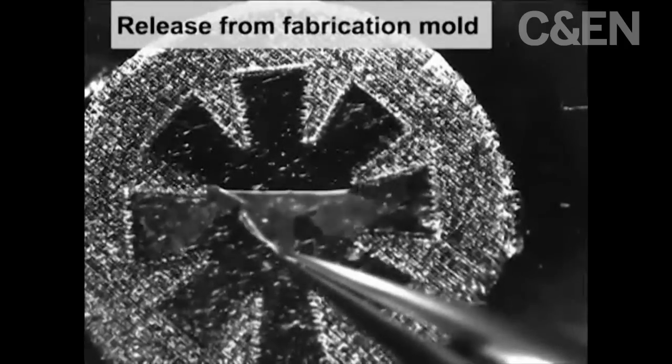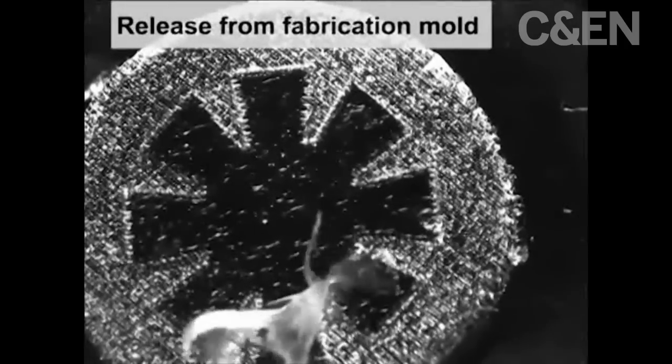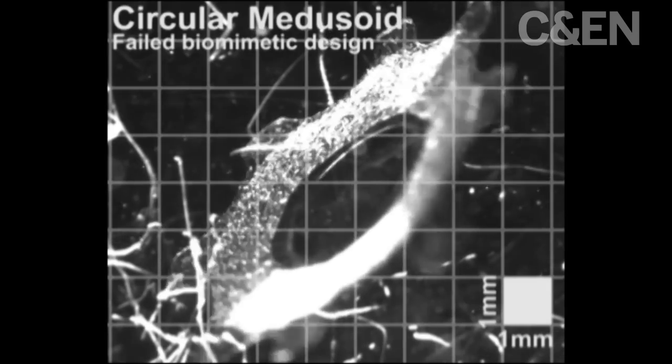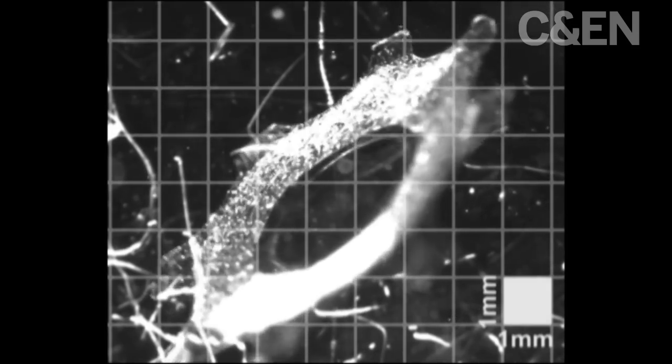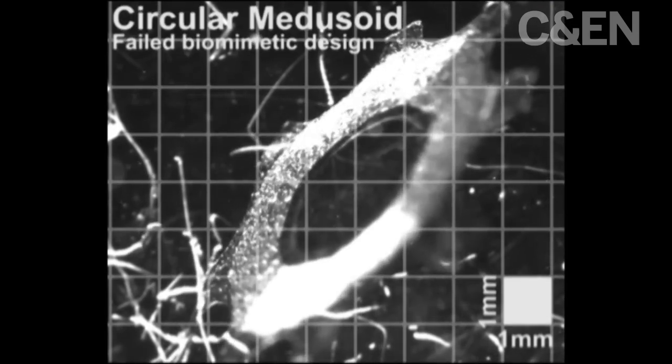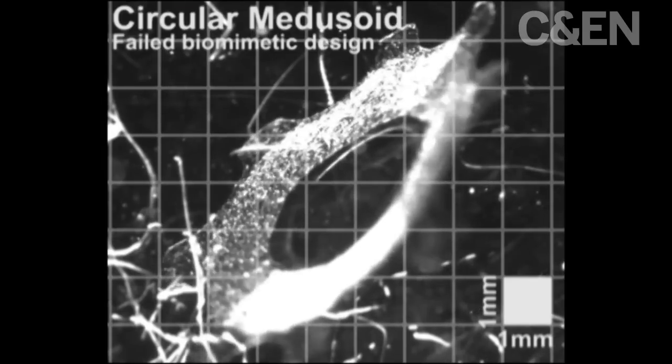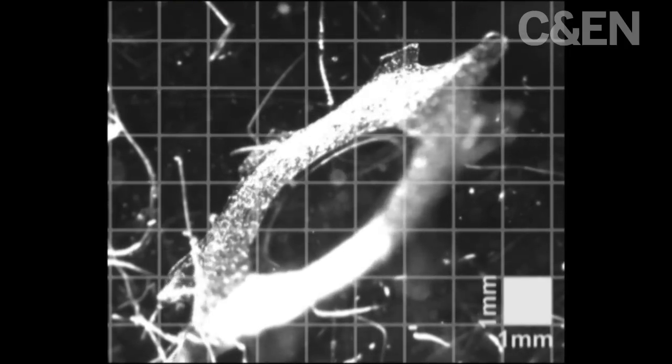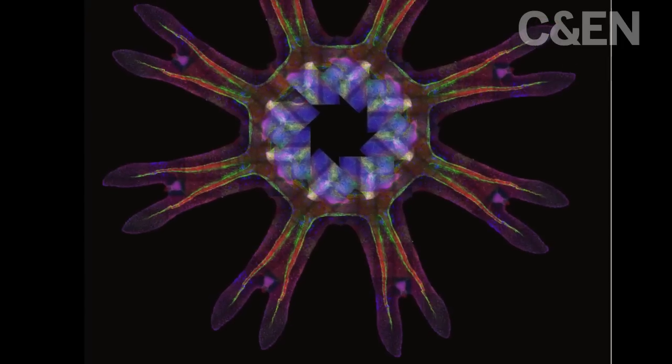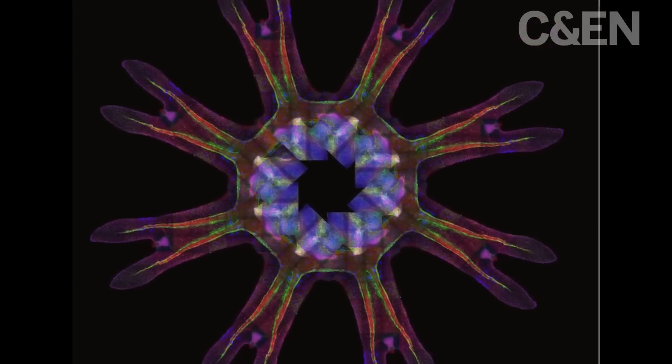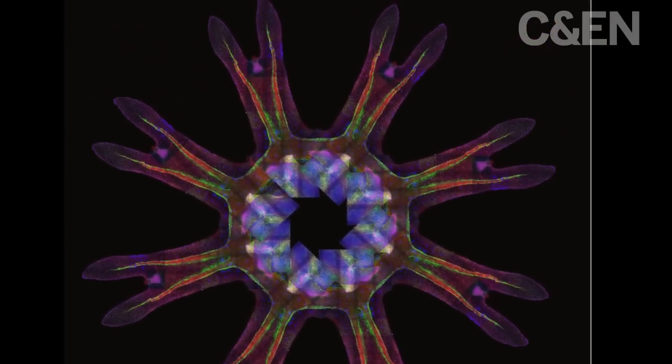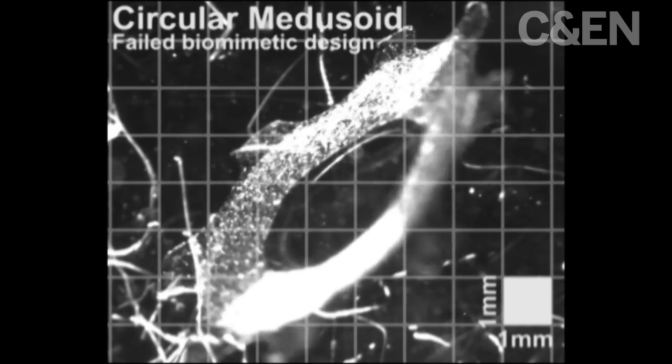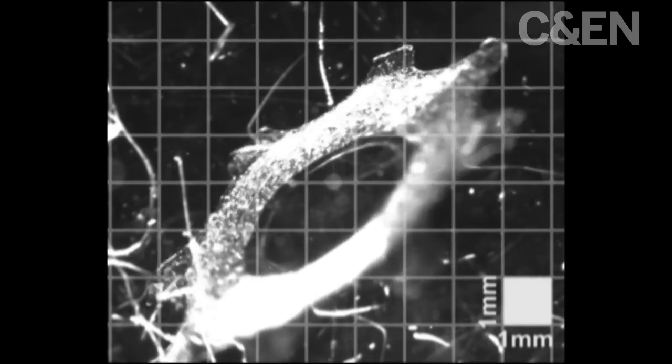Getting the fake jellyfish to match the real animal's motion, stroke for stroke, was no easy task. Listen as Naroth explains one failed design. Initially, we very naively just built a biomimetic jellyfish. That is, we just copied more or less the muscle tissue we saw in the jellyfish and also its overall shape. But it turned out that this was not functional. The silicone rubber that we are using is too stiff for the muscle layer to contract.